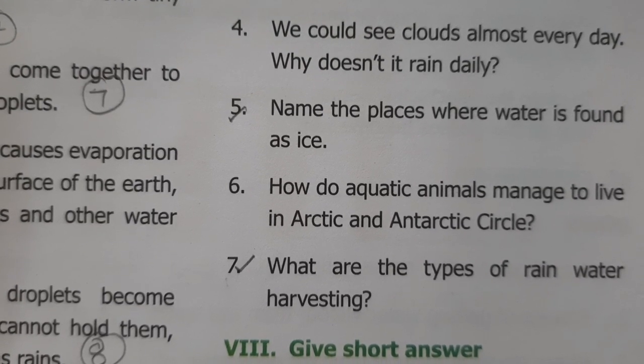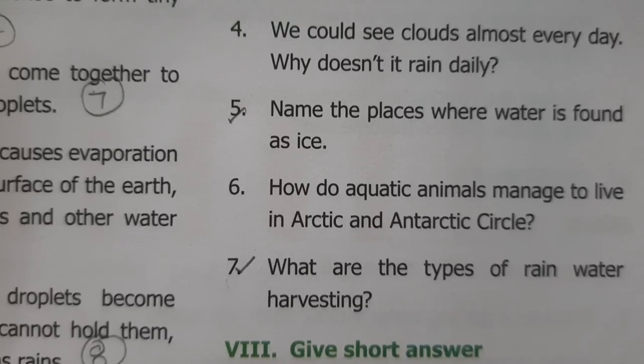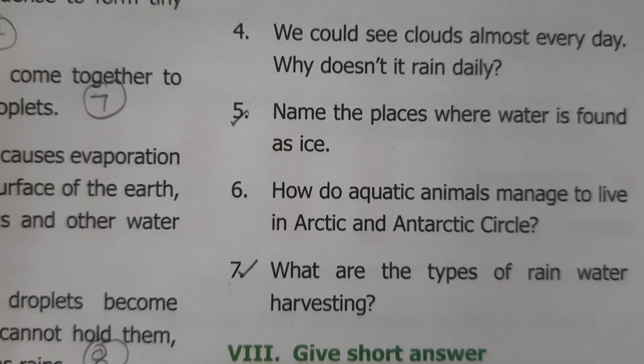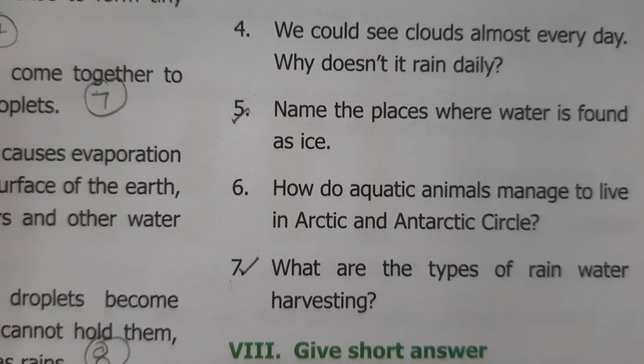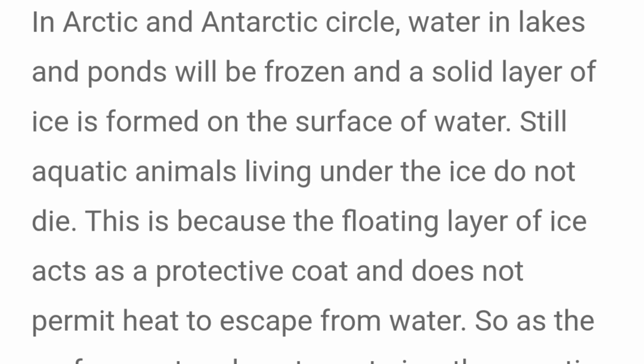Name the places where water is found as ice. Answer: polar ice caps, ice sheets, and glaciers in arctic and antarctic regions. How do aquatic animals manage to live in arctic and antarctic circles? A solid layer of ice forms on the surface of water in lakes and ponds.